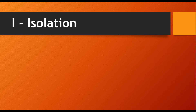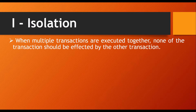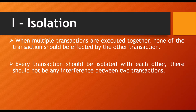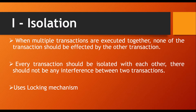Next we will see our third property: isolation. When multiple transactions are executed together, none of the transactions should be affected by other transactions. The partial effects of one transaction should not be visible to other transactions — each transaction is independent. The concurrency control component handles isolation, and in SQL Server, a locking mechanism maintains this isolation property.